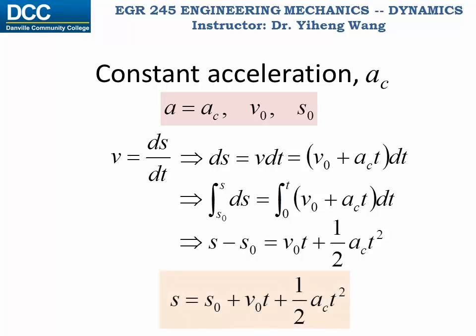And we can get this and rearrange it. We get this formula that the position of the object equals to its initial position s₀ plus initial velocity v₀ times t plus one-half times constant acceleration ac times t². Again, in this equation only s and t are variables, all the other coefficients are constants, and this equation allows us to determine the position of the object as a function of time.